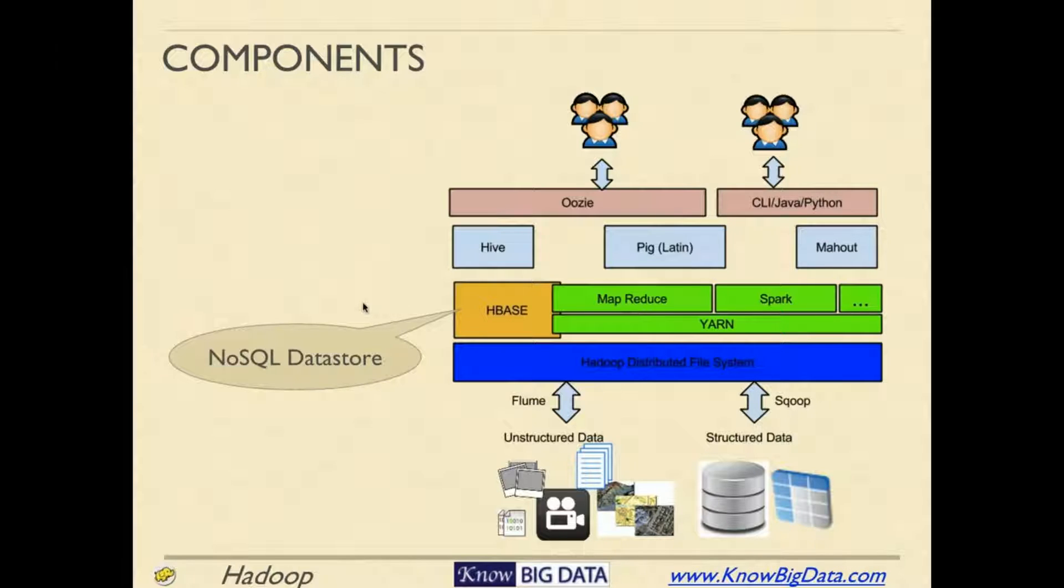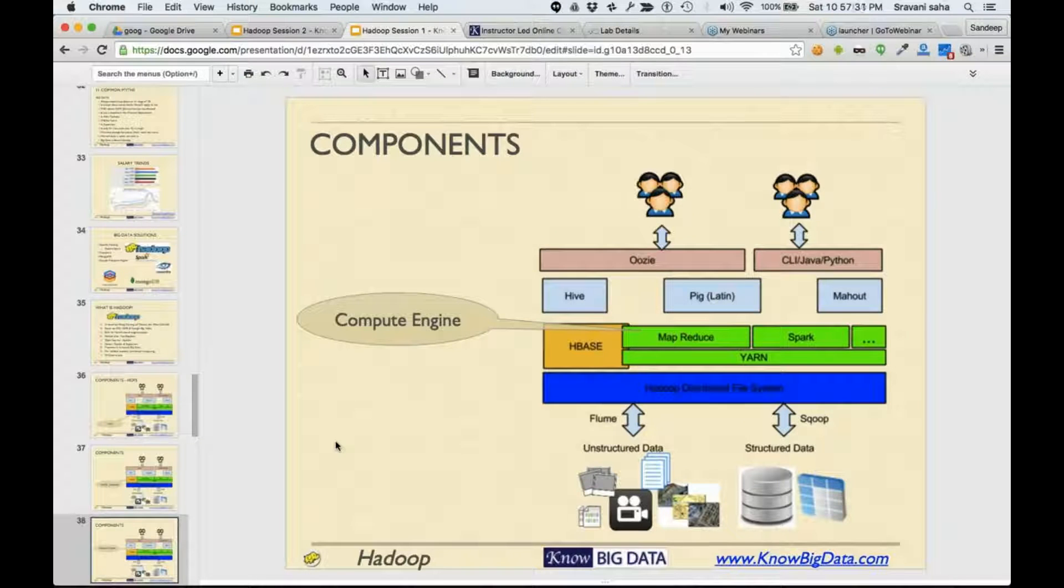The next component after HDFS and HBase is the compute engine. The file system provides you the place to put your files, and these files are spread across the cluster. But let's say you want to do some computation—who will do that? Who will execute your logic on many computers in parallel? That's where YARN comes into play, or MapReduce comes into play.